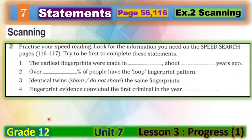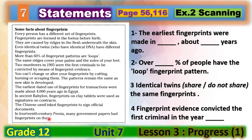Now let's move to Exercise 2. Practice your speed reading — look for the information you need on pages 116 and 117 and try to be first to complete the statements. Go to pages 116 and 117 and find the text 'Some Facts About Fingerprints.' Try to read this text quickly. You don't have to understand every single word — just get the main idea and try to complete the four sentences. You have five minutes. When you finish, play the video again to check your answers.